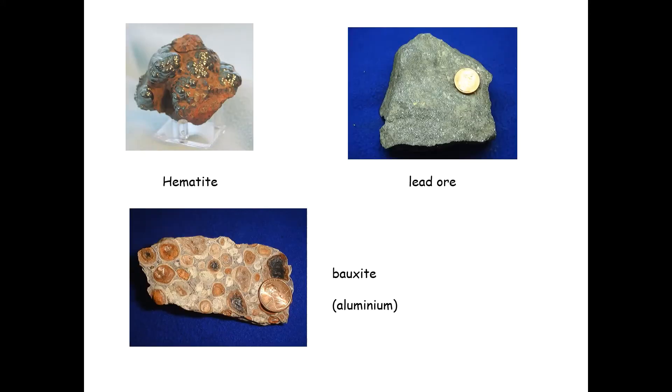Here are some examples of ores. Here's hematite. You notice it's got a reddish-brown color, and that's due to the iron ions giving this kind of red color, just like in our blood. The difficult part is extracting the metal from these rocks, and we're going to go through the methods of how to do this.